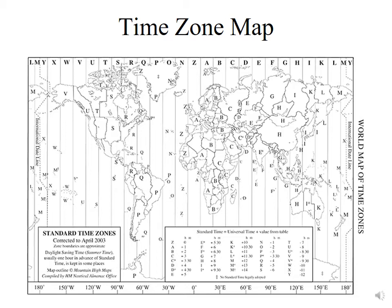We have a time zone map. The Earth has 360 degrees around its circumference, and there are 24 hours in a day, so dividing 360 degrees by 24 hours gives you 15 degrees. What we have done politically is divide the world into time zones that are nominally 15 degrees wide. We set the first time zone along the prime meridian that passes through Greenwich, England, and we refer to that time zone as time zone Z.